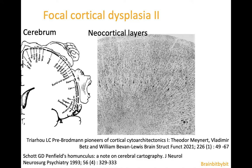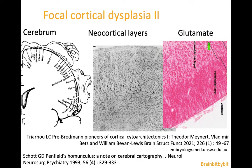We will also talk a little bit about the normal layering of the neocortex and the abnormalities in FCD, and we will talk about the development of the neocortex, especially of the glutamate neurons.